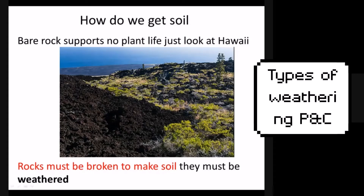Let's talk about the types of weathering and soil. On earth, pure rocks cannot support vegetation. This is a picture of Hawaii, and on the left is a fresh lava flow. On that fresh lava flow there are no plants or vegetation. Before plants or vegetation can grow, the rocks must be broken down to make soil — the rocks have to be weathered.